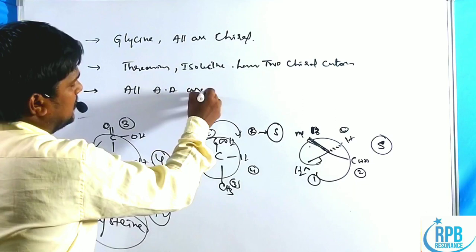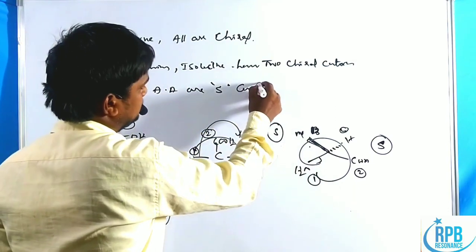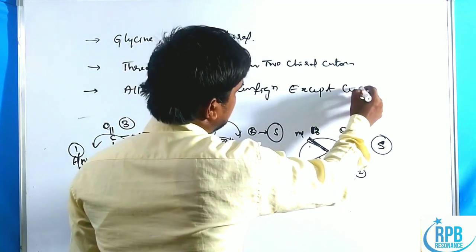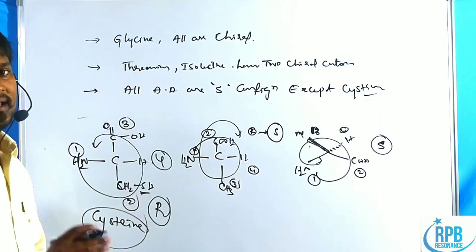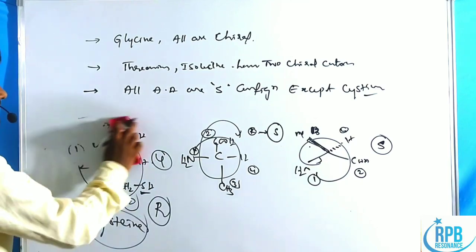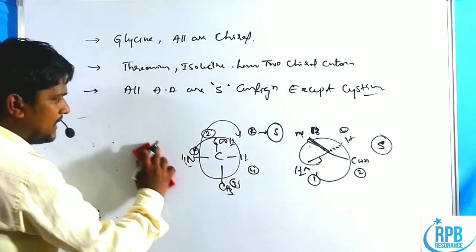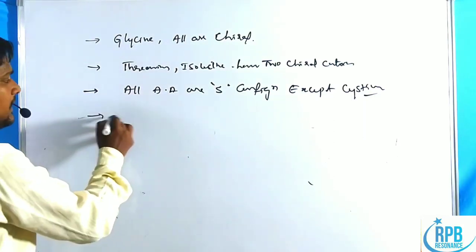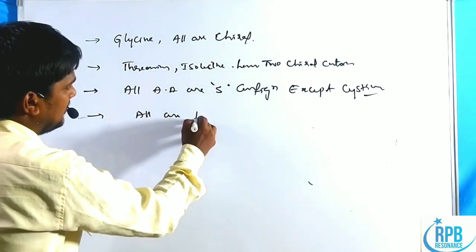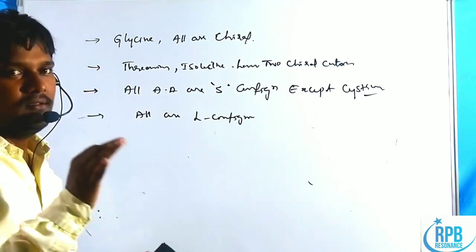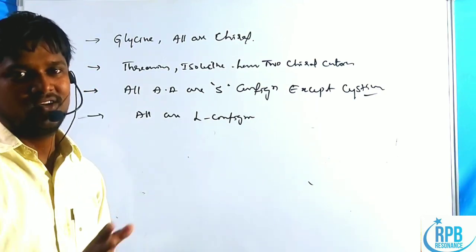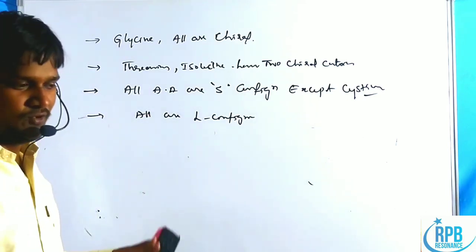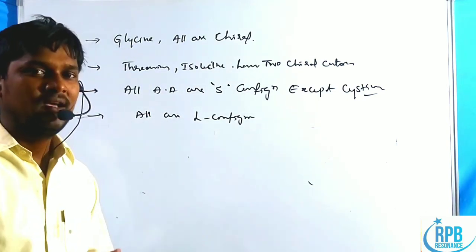All amino acids are S configuration except cysteine, which is R configuration. To summarize: all amino acids are L configuration based on relative configuration. These four points were missed in the previous class and are now covered as an introduction to the amino acid lectures.